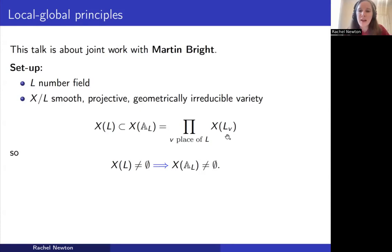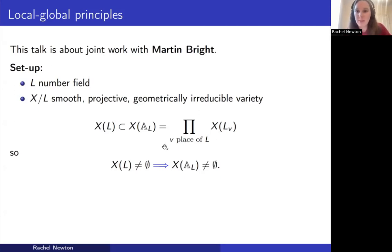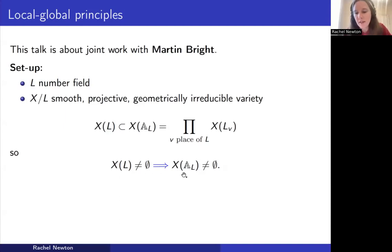So if L were the rational numbers, this would be the product of the real points with the p-adic points for every prime P. The embedding is because L sits inside all its completions, so we can view a rational point as a p-adic point for any prime P. In particular, if I have a rational point on X over L, then I have points everywhere locally — in other words, an adelic point.